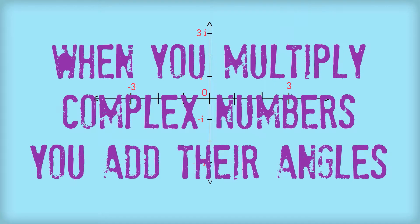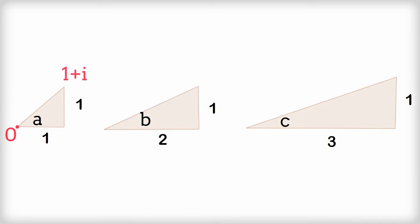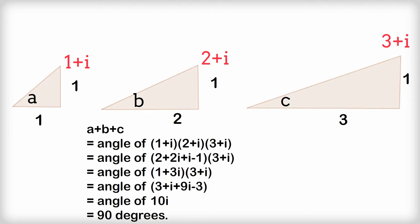The beautiful rule is that when you multiply complex numbers, you add their angles. Here's a nice example with three triangles with angles A, B, and C. We want to find angle A plus B plus C. If you place this on the complex plane — with the origin here — the points would be 1 plus I, 2 plus I, and 3 plus I respectively. To work out angle A plus B plus C, we multiply these three complex numbers and find the resulting angle. The calculations show that we end up with 10I. Since 10I is a rotation of 90 degrees from the point 1, the answer is that A plus B plus C equals 90 degrees.